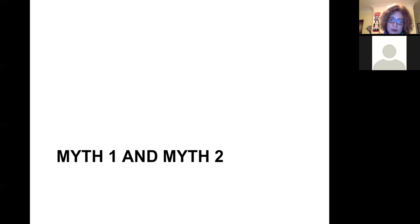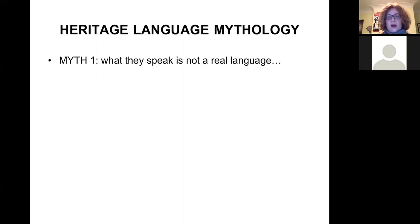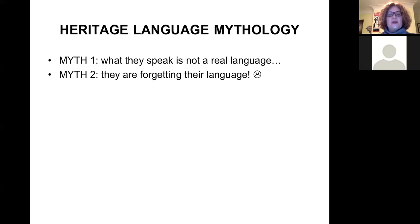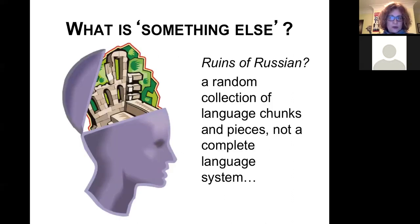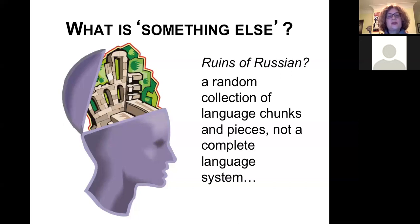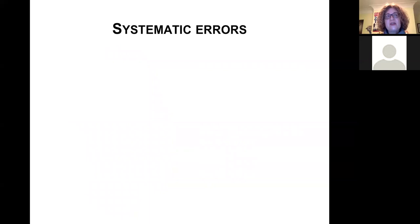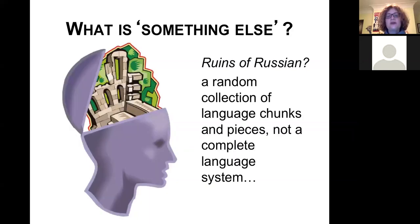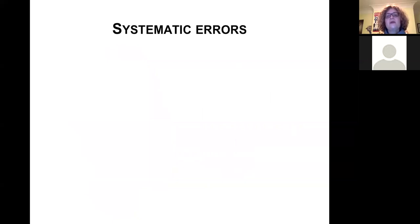The first myth was 'what they speak is not a real language,' and the second myth is 'they're forgetting their language.' When people say they don't speak Russian and speak something else, the idea is that they have some kind of set of ruins in their head — not a language, but a random collection of language chunks and pieces, some rhymes, but not a complete language system. I often hear 'these people just remember phrases, they don't know any rules.' That's incorrect. What they speak is a language system, not a system of ruins, and they make errors — but they make those errors very, very systematically.